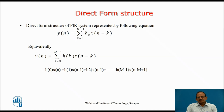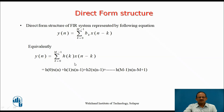The direct form structure for an FIR system is represented by y(n) = sum from k=0 to M-1 of b_k * x(n-k), equivalently written as sum from k=0 to M-1 of h(k) * x(n-k), since the coefficients b_k and the impulse response h(n) are the same. Expanding this: y(n) = h(0)*x(n) + h(1)*x(n-1) + h(2)*x(n-2) + ... + h(M-1)*x(n-M+1).